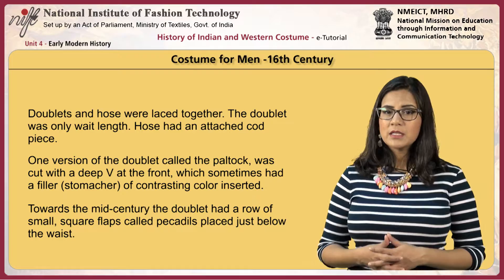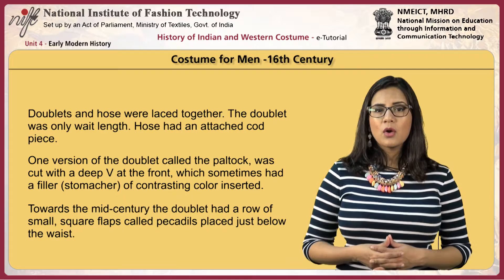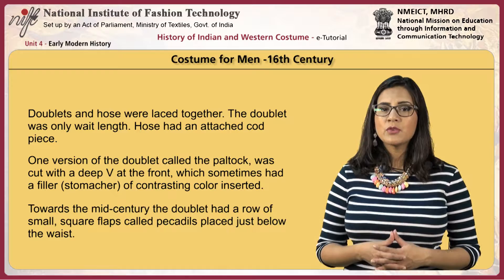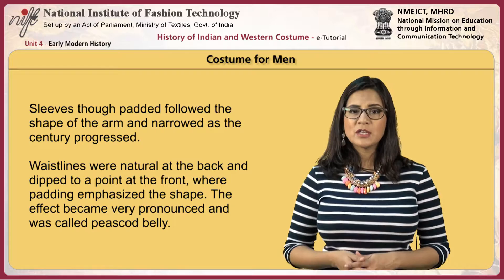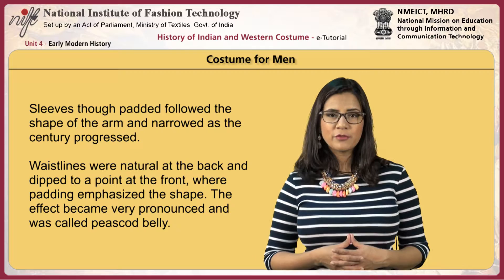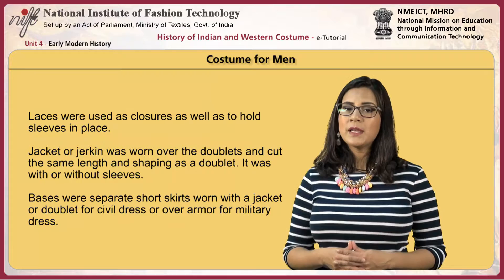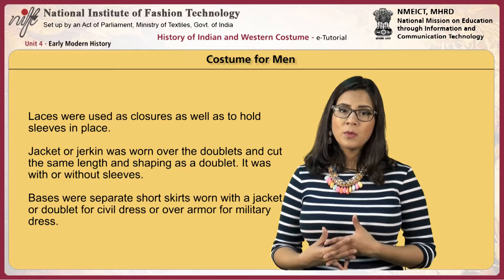Doublets and hose were laced together. The doublet was only waist length. Hose had an attached codpiece. One version of the doublet, called the patlock, was cut with a deep V at the front, which sometimes had a filler or stomacher of contrasting color inserted. Towards the mid-century, the doublet had a row of small square flaps called pecadils placed just below the waist. Sleeves, though padded, followed the shape of the arm and narrowed as the century progressed. Waistlines were natural at the back and dipped to a point at the front where padding emphasized the shape — the effect became very pronounced and was called peascod belly. Laces were used as closures as well as to hold the sleeve in place. A jacket or jerkin was worn over the doublet, cut the same length and shaping as the doublet, with or without sleeves. Bases were separate short skirts worn with a jacket or doublet for civil dress or over armor for military dress.